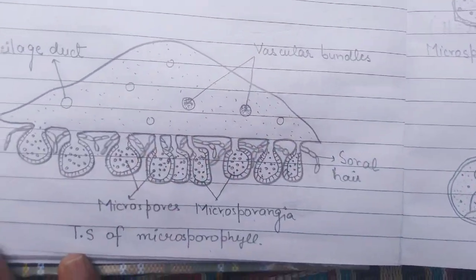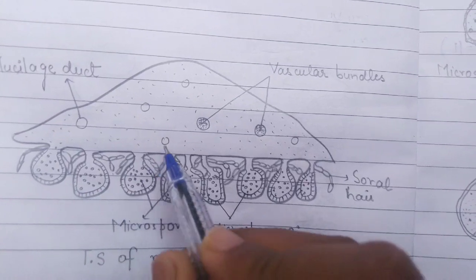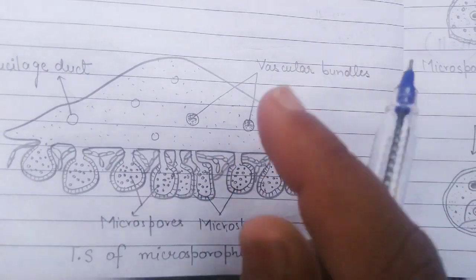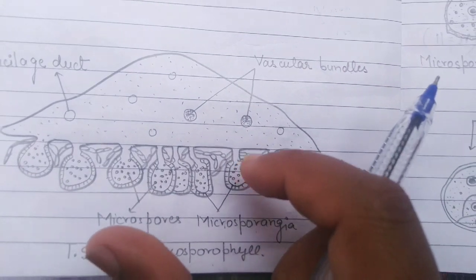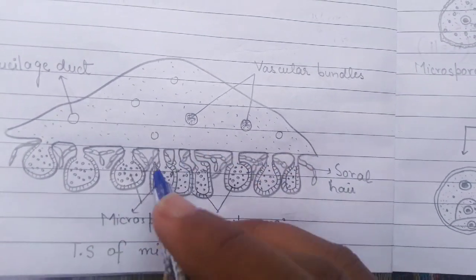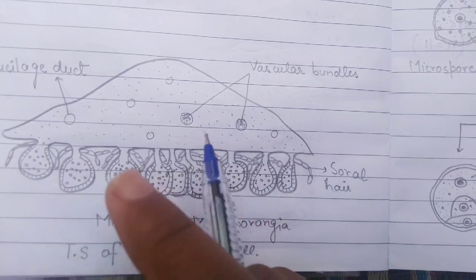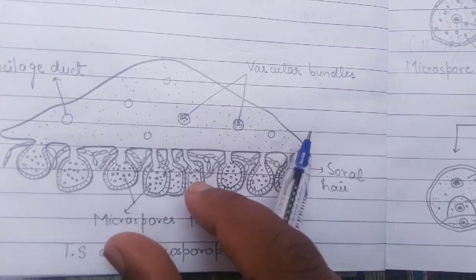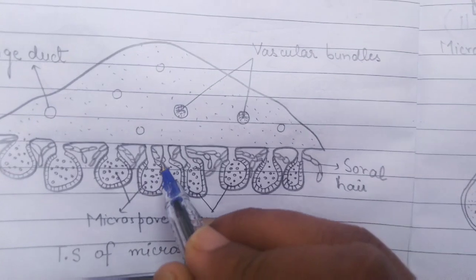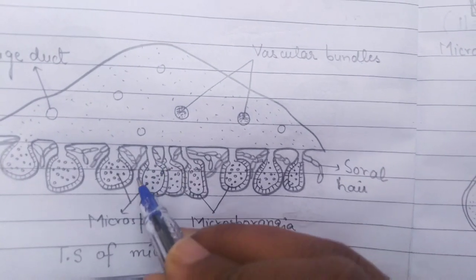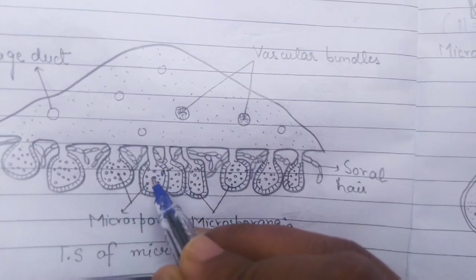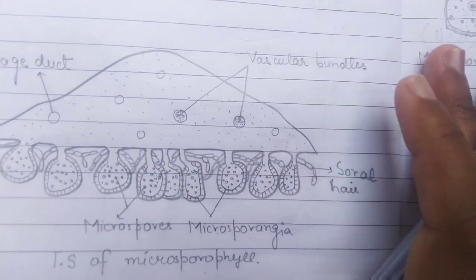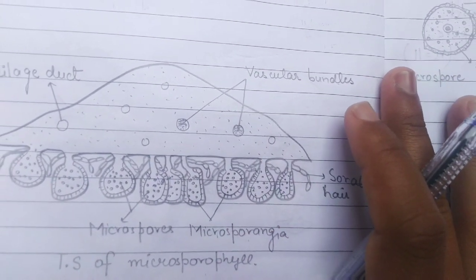In the previous video we also studied this diagram — this is the transverse section of Microsporophylls, which bears on its lower abaxial surface in the middle fertile flattened portion these Microsporangia, present in a group of three to six called a Sorus. Each group is called a Sorus, and this is the structure of a single Microsporangia containing a large amount of microspores inside this oval pollen sac-like structure.